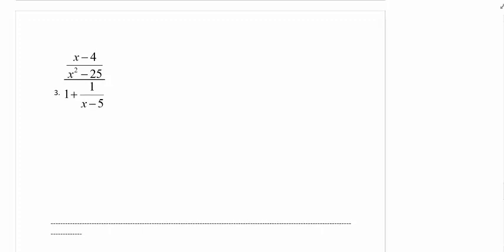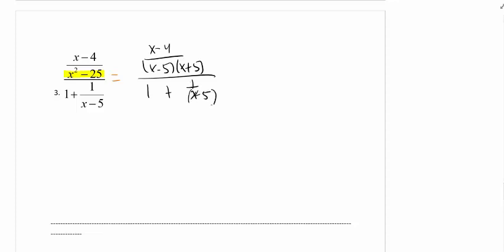Looking at number 3, this is kind of a toss-up on which method is better because you already have a single fraction on the top. If you're going to use Method 2, the first thing you have to do is rewrite it in factored form to help find the LCD. This denominator piece is a difference of squares, which factors to x minus 5 times x plus 5. So the LCD is x minus 5, x plus 5.